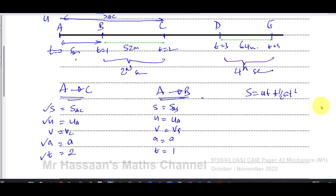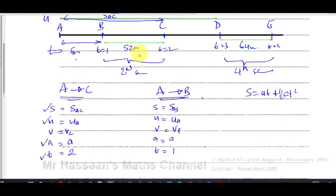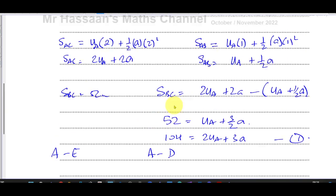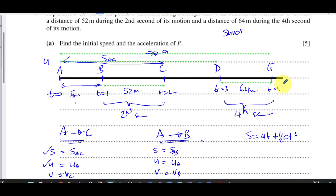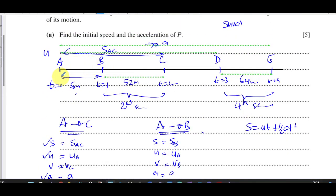Now I can do a similar thing for the fourth second. I consider the distance between A and E and the distance between A and D. For A to E, using SUVAT: U equals UA, T equals four seconds. For A to D: U equals UA, T equals three seconds. It's important to keep U referring to the same starting point A throughout all equations.